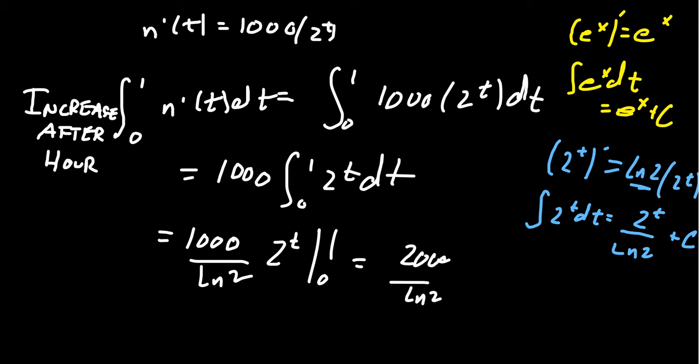And then we subtract from that 2 to the zero, which is actually one, so you get 1000 over the natural log of 2. All right, and subtracting those, because they both have a common denominator of natural log of 2, you end up with 1000 over the natural log of 2.